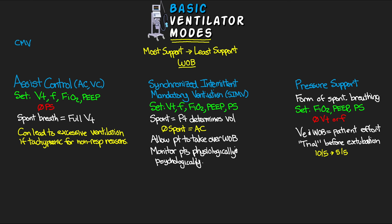To summarize, these modes look at similar settings and deliver volumes in similar ways, but the key differences come in how they handle a patient's spontaneous breath. From CMV where spontaneous breaths aren't acknowledged, to AC where they're recognized but given a full breath, to SIMV where the patient determines the size of their spontaneous breath, to pressure support where there are no mandatory breaths and everything is based on the patient's own work of breathing — it's a progression from most to least support.